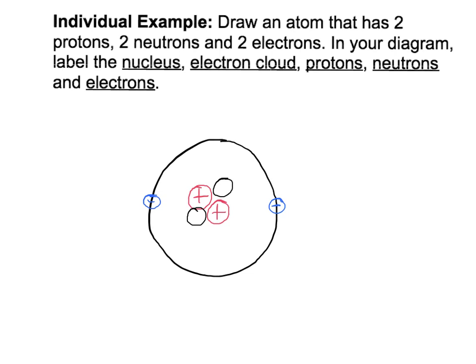So let me start with the blue circle that has the negative sign in it. That is an electron.